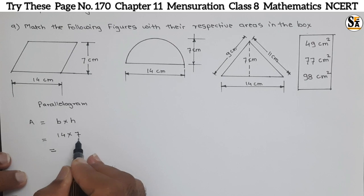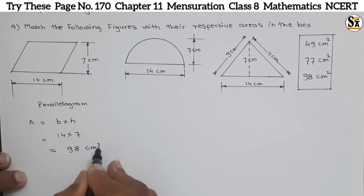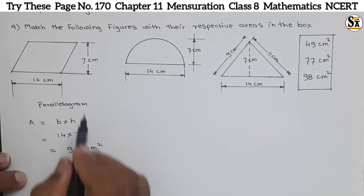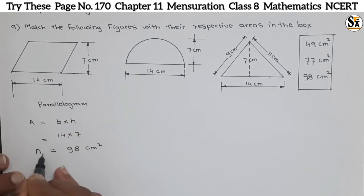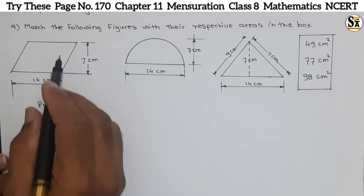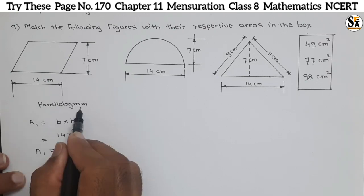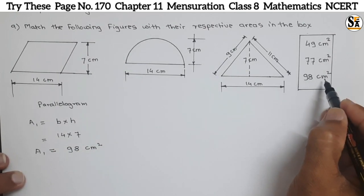If we take the multiplication, 14 × 7 = 98. The unit will be centimeter square, because the unit for length is centimeter, and centimeter × centimeter = centimeter square. So A1 (the area of this parallelogram) equals 98 centimeter square, and here in the box we can see 98 centimeter square — so this is our first match.